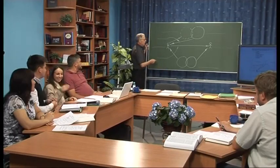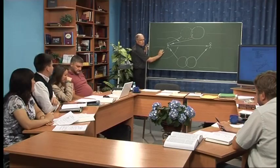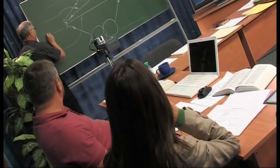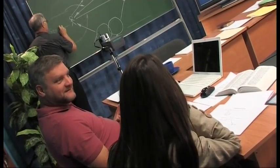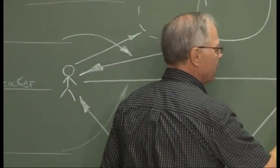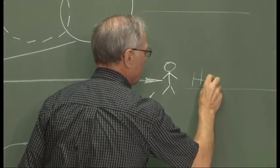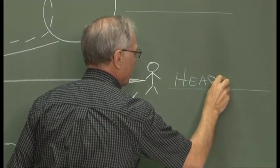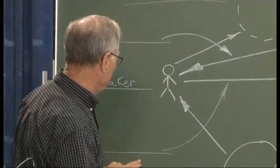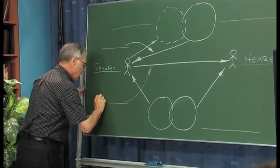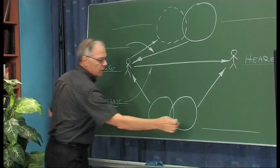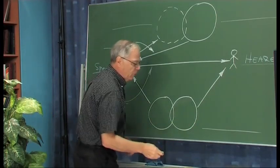Let's take it one step at a time. We'll start here because this is quite easy. What did you write in here? Speaker — everybody agree? Good. If this is the speaker, then what did you put over here? Hearer. A little bit more difficult — what would this be? Message. Not too hard. And this one? Frame of reference. Good.